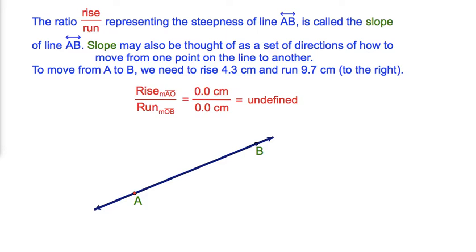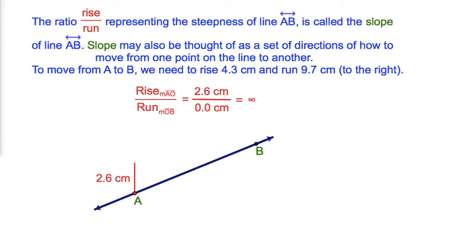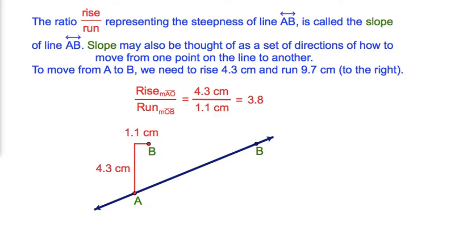Slope may also be thought of as a set of directions of how to move from one point on the line to another. To move from point A to point B, we need to rise 4.3 cm and run 9.7 cm to the right.